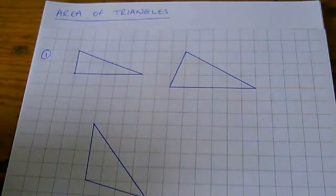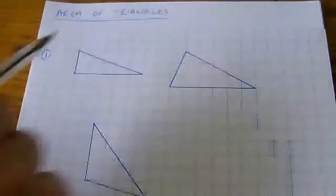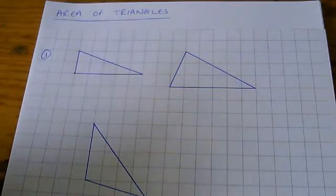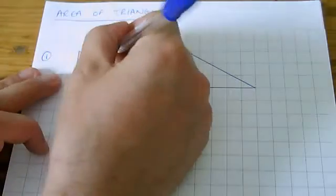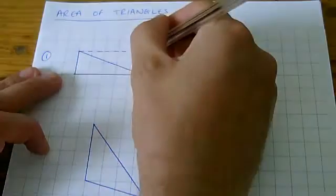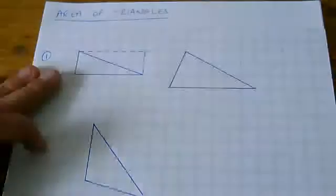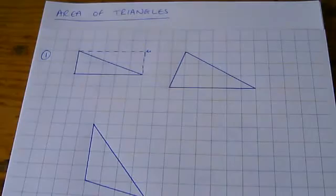So, a better method is to try to think of a triangle always as half of a rectangle. If I draw in some dotted lines here, like that, ignore that bit, you can see what I mean.